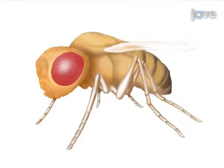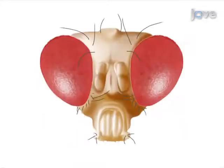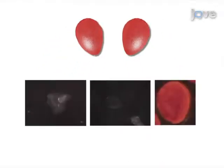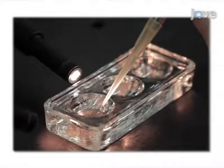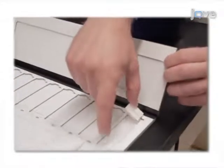First, retina dissections are demonstrated at three developmental stages: the larval stage, the pupal stage, and the adult stage. The next steps are fixation and immunohistochemistry. In the final step, the retinas are mounted onto slides for visualization using confocal microscopy.